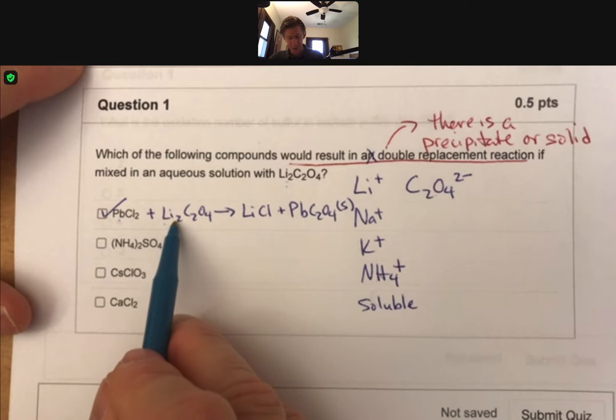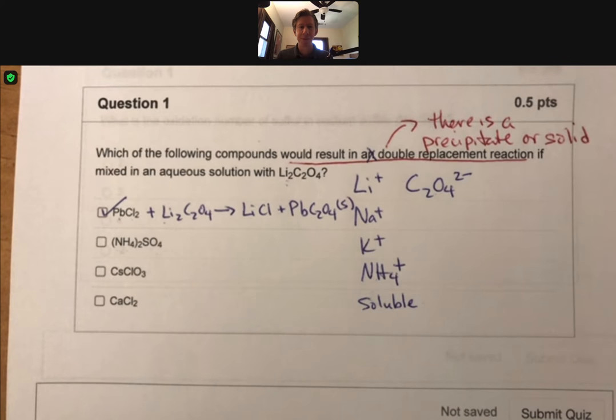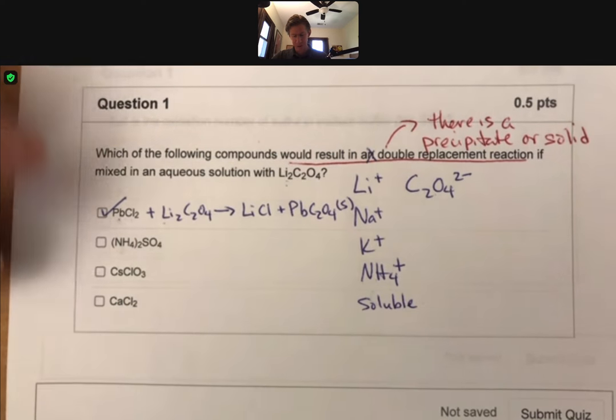Ammonium sulfate has ammonium in one of them, it has lithium in the other one. That means both combinations, or any combinations of them, will always be soluble, which means there is no precipitate and there is no reaction. So don't check that one.